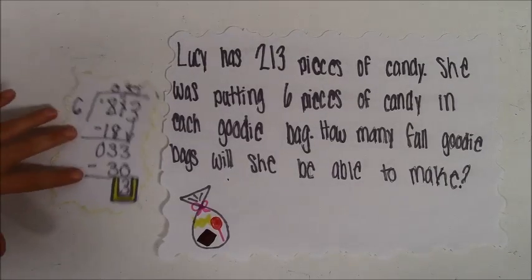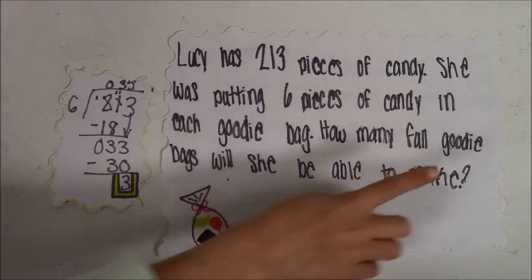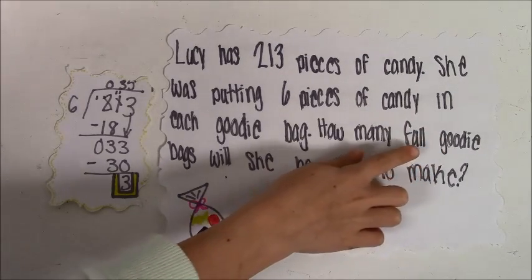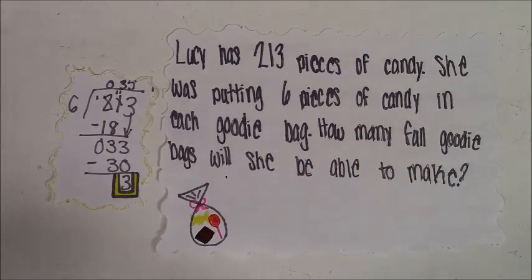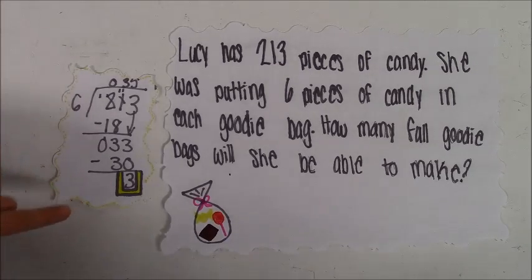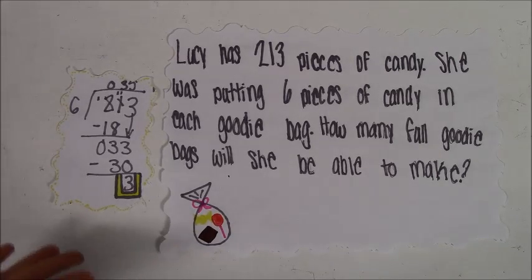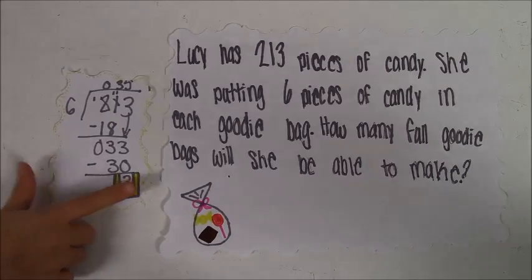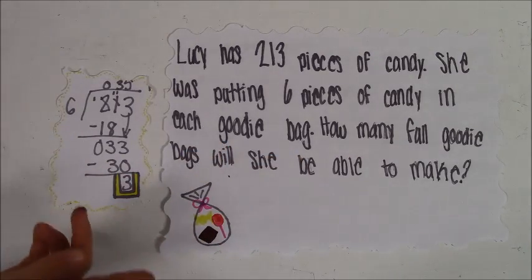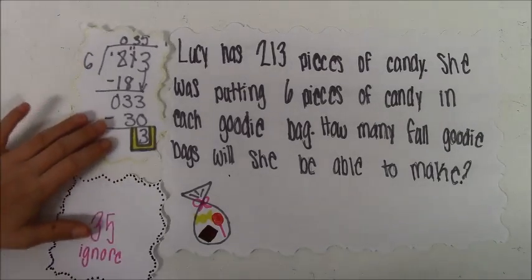This is the problem we used to figure out the answer. One of the main words we paid attention to was 'full' — you need full goodie bags. So we did 213 divided by six and got 35 remainder three. In this problem, you're not going to pay attention to the remainder three because you want to know how many full goodie bags you can make. The answer is 35, and you would ignore the remainder.